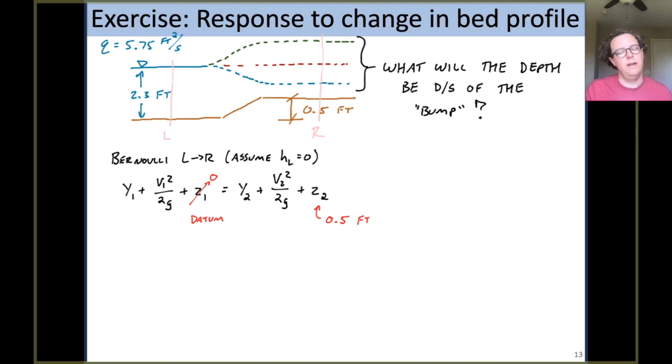So I'll establish my datum so that zero elevation is the lowest point in the problem. So that puts the elevation of zero on the left-hand side, and we know the elevation then would be 0.5 feet on the right-hand side. I know the y1, the depth on the left-hand side of the problem, is 2.3 feet. I don't know velocity over there, but I do know that velocity can be described as q over a. I also can recognize that dividing both of those by width b, so this written in red is a capital Q over b. If I divide the top and the bottom by b, I end up with specific discharge per depth. So I can do that calculation and I arrive at a velocity of 2.5 feet per second on the left-hand side.